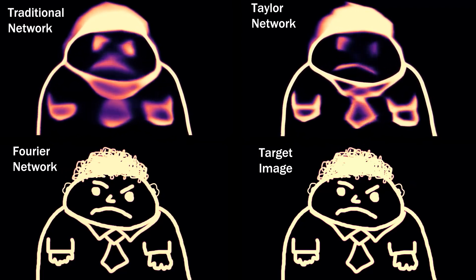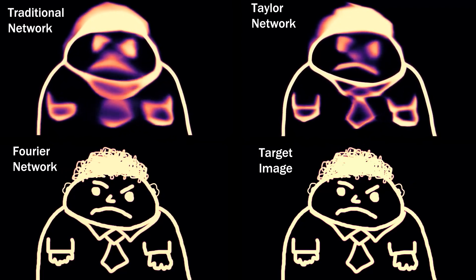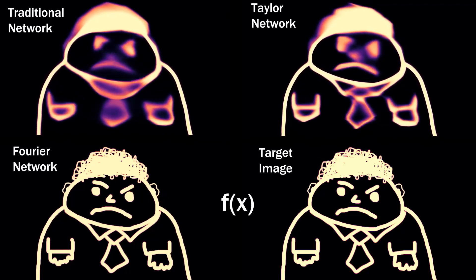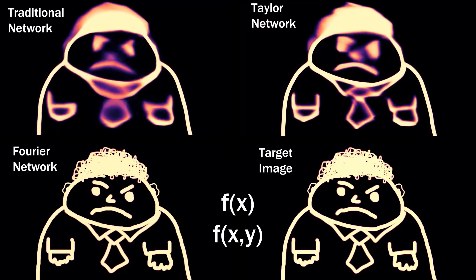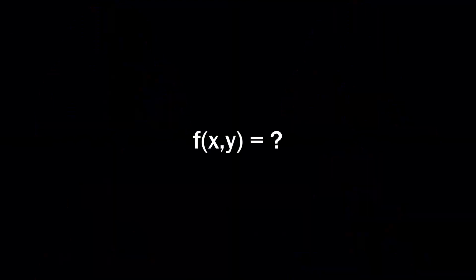Now, I've glossed over a very important detail. The example Fourier series I gave had one input, but this function has two inputs. To handle this properly, we have to use the two-dimensional Fourier series — one that takes an input of x and y. What do we do with that extra y?